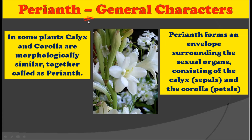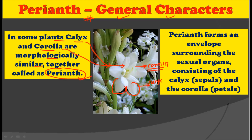First of all, what is Perianth and what are the general characteristics of this Perianth? In some plants, the calyx and corolla are morphologically similar, and together they are called as the Perianth. That is, in some plants the calyx — the outer whorl — and the corolla — the inner whorl — are both morphologically similar. You cannot distinguish between which one is the calyx and which one is the corolla, so these morphologically similar calyx and corolla together are called the Perianth.